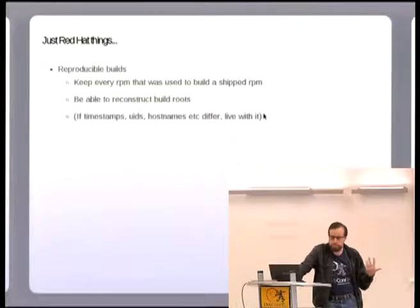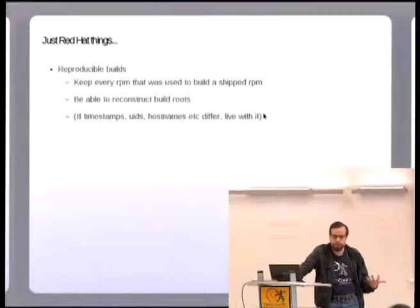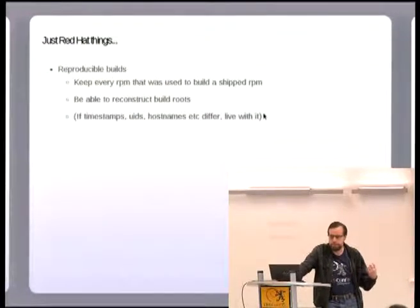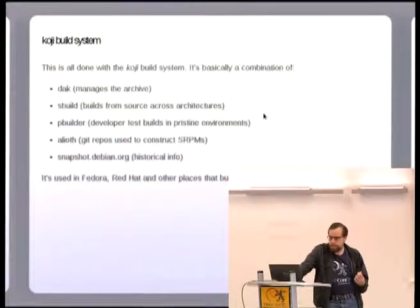And one of the things that comes with that is a kind of reproducible builds version. If you've got everything you ever used and released, you want to also be able to reproduce the build environment and be able to get at the same thing again. So if you look at Red Hat reproducible builds, you'll get something that's not quite as cool as the reproducible builds going on in Debian at the minute. And so what that's all done with is the Koji build system.